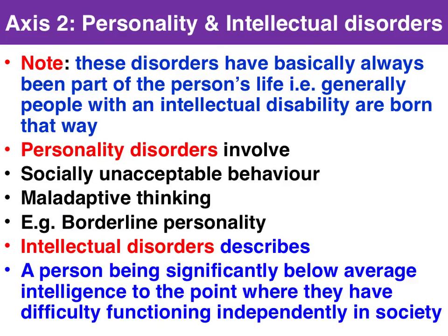Axis 2: does the patient have a personality or intellectual disorder? A key aspect of Axis 2 is that this disorder is part of the person's life — it's part of who they are — meaning they will essentially always have the disorder.